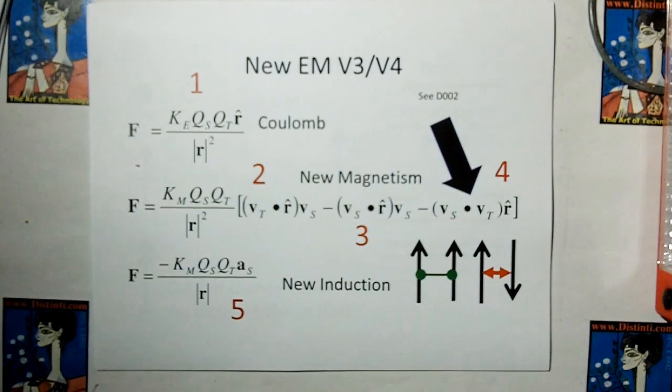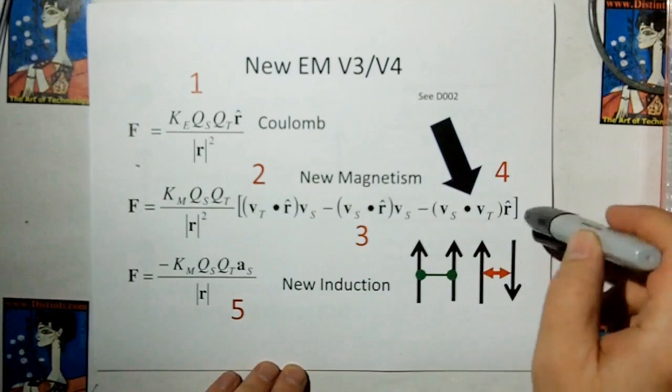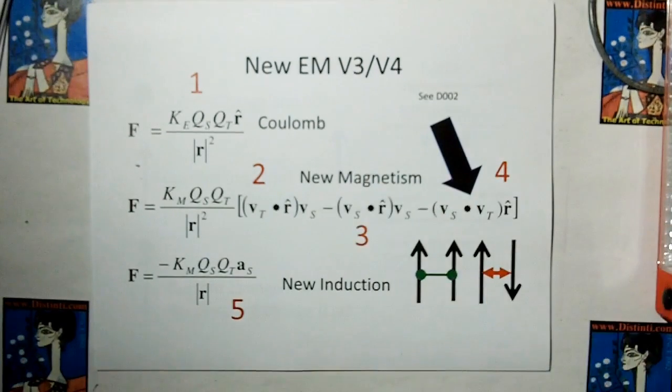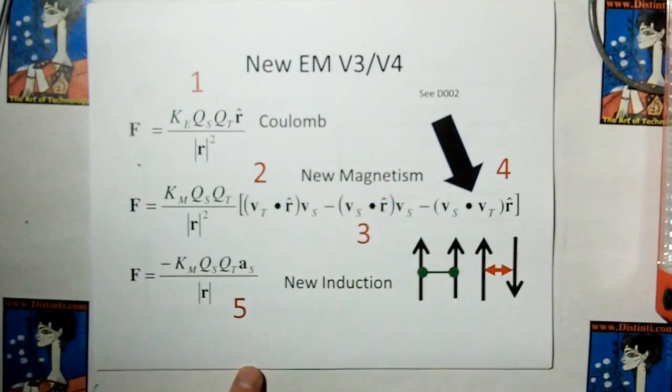We already discussed this one in Sinti's world video number two, video D002. We discussed the fourth term of electromagnetism which is the third term of new magnetism and this is the force diagrams we came up with. But today we're going to do one, two, three, and five.